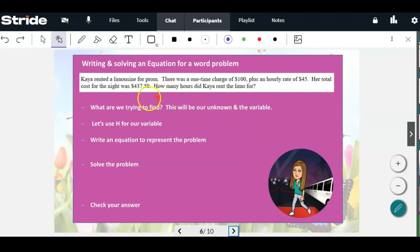So let's look at what we do. I just broke it down in steps here. So here's our first part: what are we trying to find? This will be our unknown and the variable. It's important to read it carefully and understand what you're looking for. Kaya rented a limousine for prom. There was a one-time charge of $100 plus an hourly rate of $45. Her total cost for the night was $437.50. How many hours did Kaya rent the limo for? So that's what we're looking for there. How many hours? That's our question. So we need to know number of hours. Let's use H for our variable, H for hours.